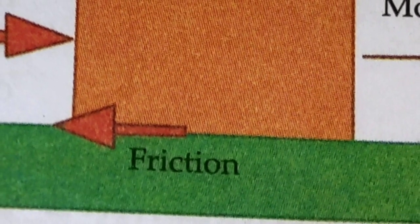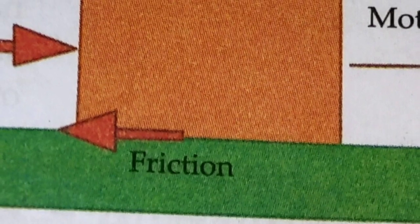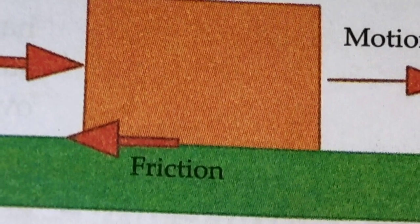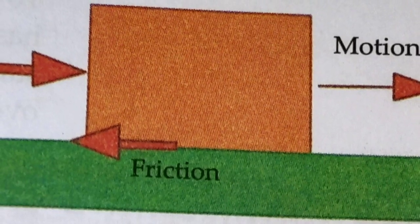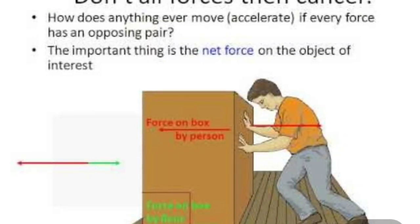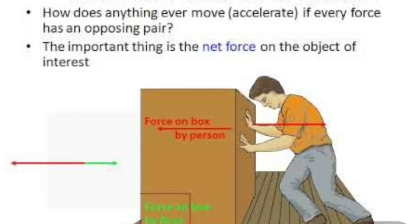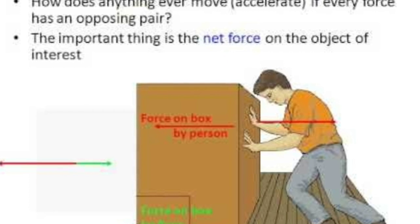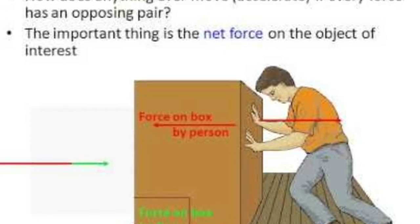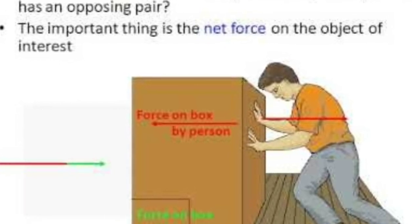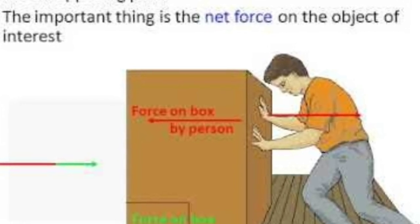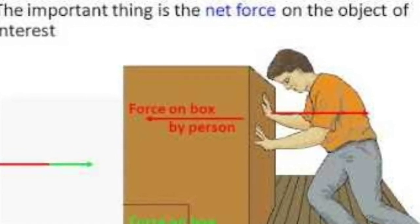The opposing force that comes into play whenever an object tries to slide over another object is called friction. Friction always applies in the opposite direction. From one side we are applying a pushing force, and in whichever direction we apply the pushing force, the object will move in that direction. But friction will always be opposite to the pushing force or applied force.